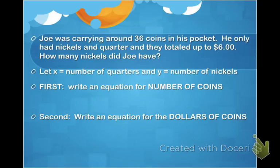So the very first thing that you have to do on a system is define your variables. And in this case, we're going to use x and y, and we're going to let x represent the number of quarters, and y represent the number of nickels.